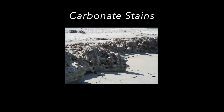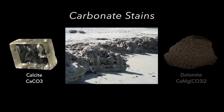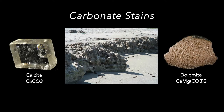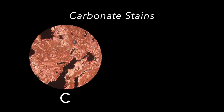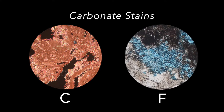Carbonate stains discriminate between the main categories of abundant carbonate minerals. C-stain tints calcite red, offering distinction from the magnesium-bearing carbonate dolomite, which does not stain. F-stain tints ferrous iron blue, and its presence may be indicative of unusual hydrothermal alteration. The combination of C and F stains can offer additional clues about formation conditions.